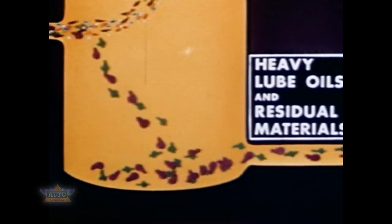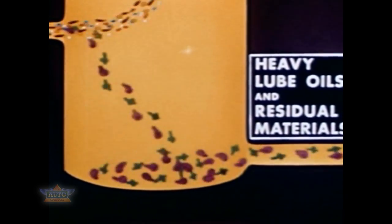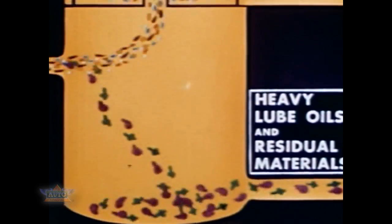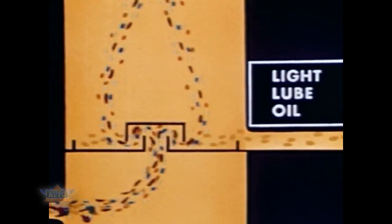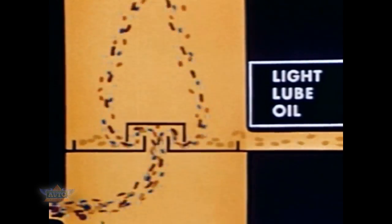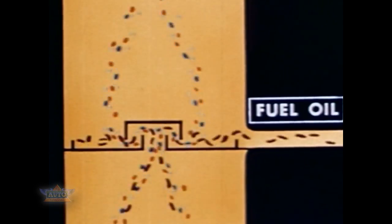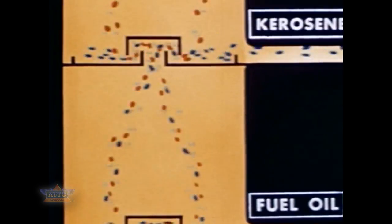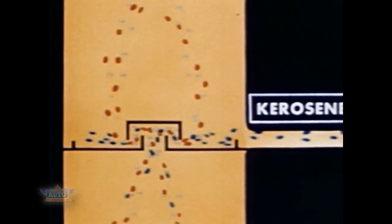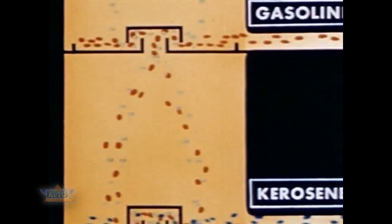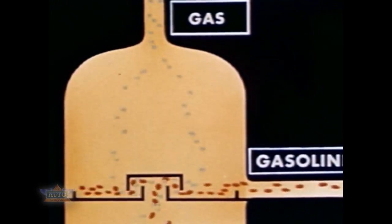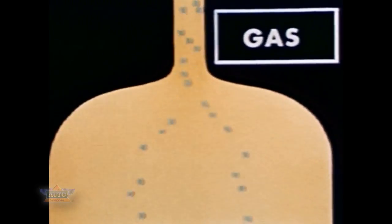Here we see the crude oil being heated — most of it is vaporized. At the bottom of the bubble tower, unvaporized large molecules of heavy lube oil and residual materials are drawn off. At the second level, the light lube oil is condensed out of the vapor and withdrawn. At the third level, the largest of the lighter remaining molecules condense to form the fuel oil cut. At the fourth level, kerosene is condensed and drawn off. At the fifth level, the gasoline molecules become liquid, leaving the very light gas molecules to go out the top of the bubble tower.